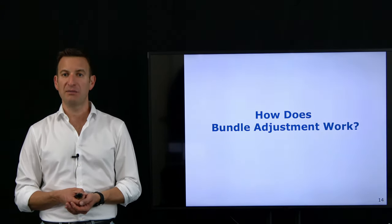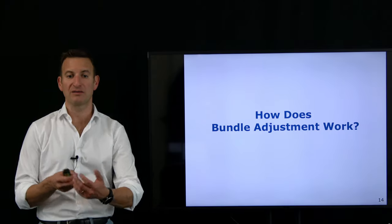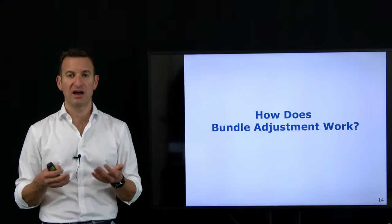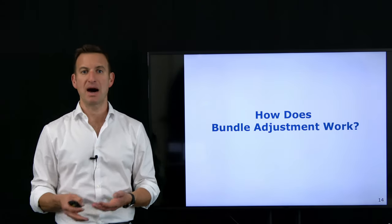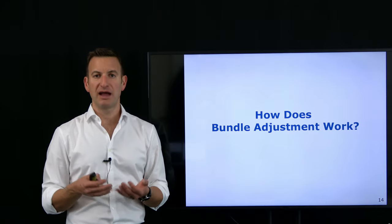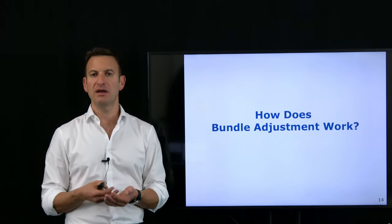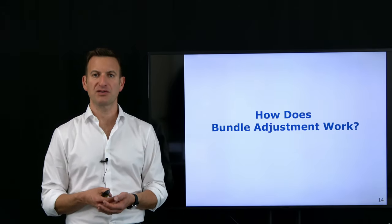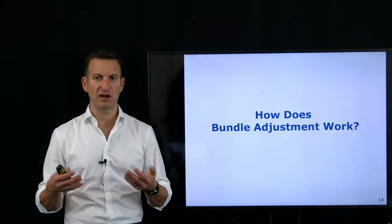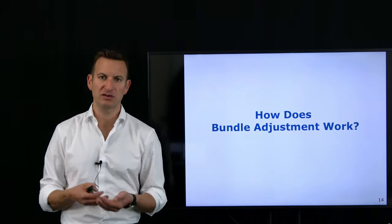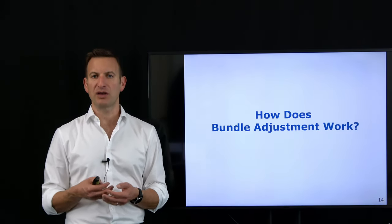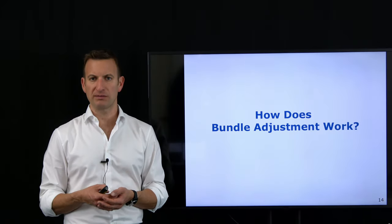The main question we need to answer is: how does bundle adjustment work? How do I turn my images into a 3D representation of the world? As before, we assume we can estimate features from our image data — SIFT features, SURF features, binary features, whatever it may be. We assume we are able to extract distinct points in our images, and we use only these points to perform our 3D reconstruction task.